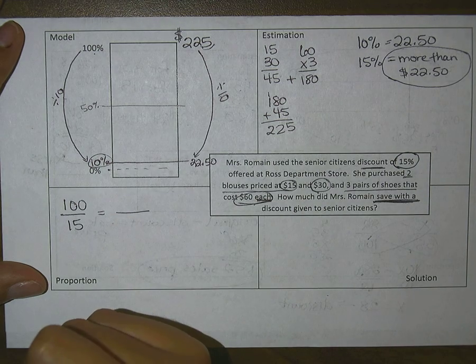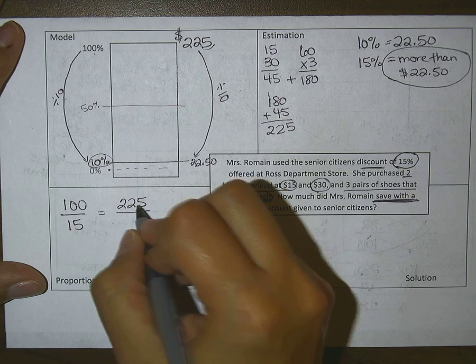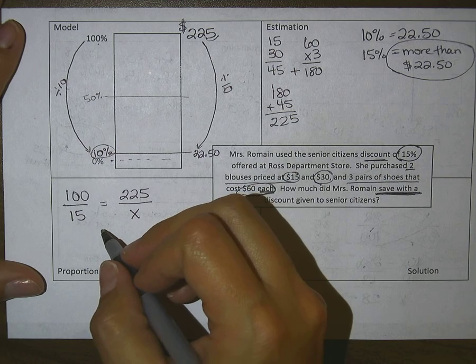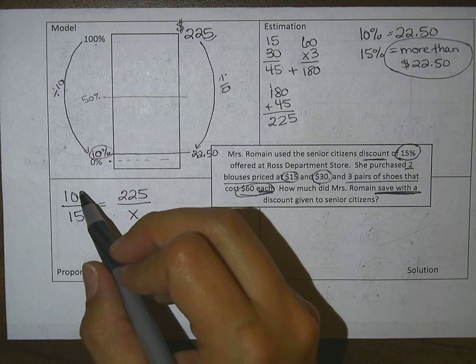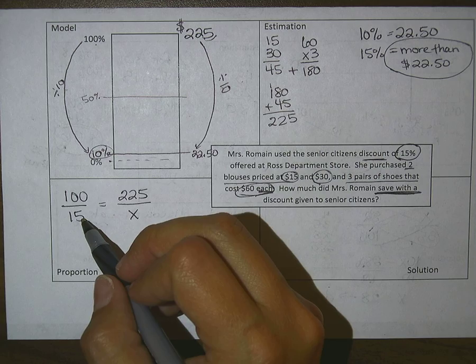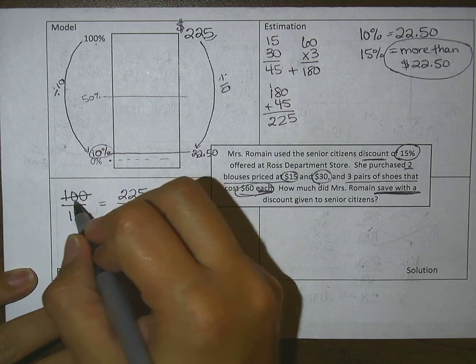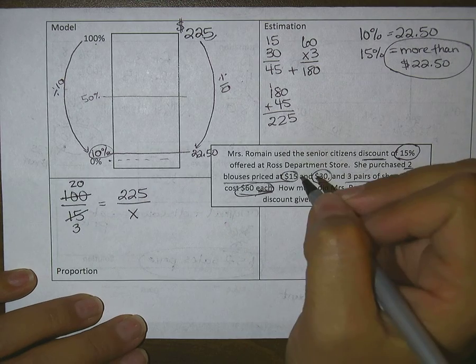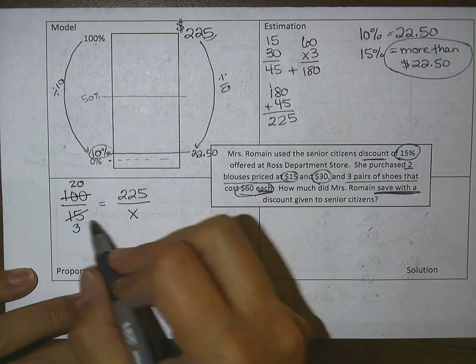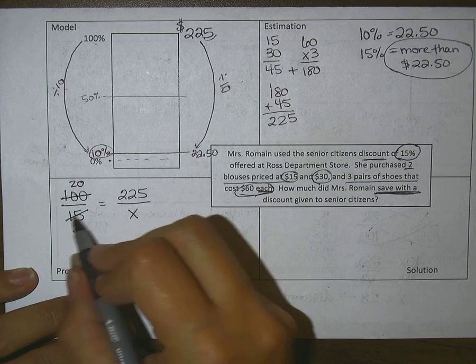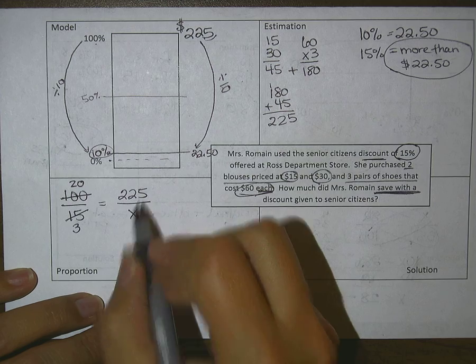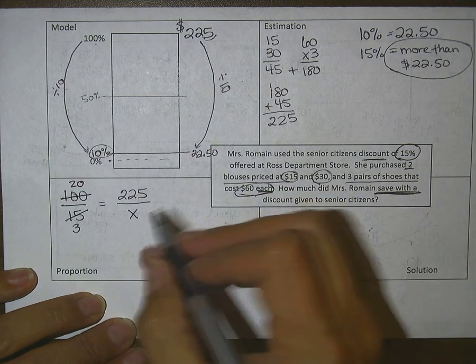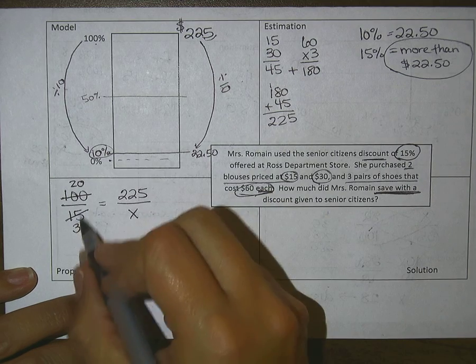Always looking for shortcuts. These can be divided by 5, so I'm going to go ahead and do that. 5 goes into 100 twenty times, and 5 into 15 goes in 3 times. The only reason I simplify that is because I know that if I multiplied 15 times 225, it would be just a little bit too big. Making them smaller definitely helps.